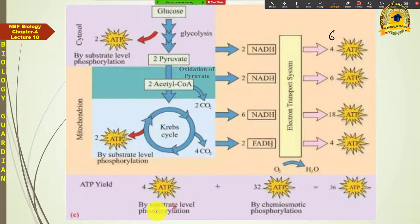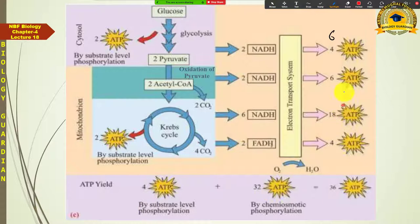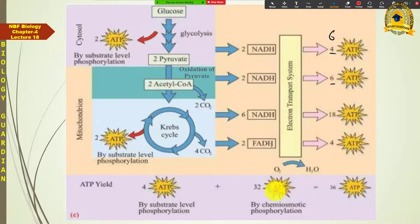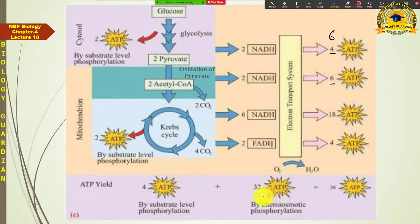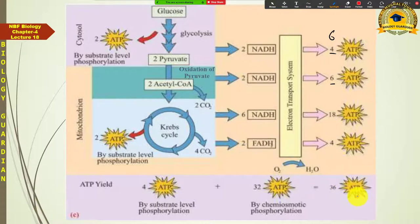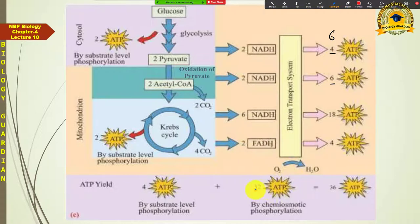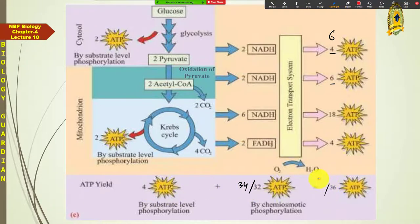The total ATP yield by substrate level phosphorylation throughout the entire pathway is 4 ATPs. The 32 ATPs are generated by chemiosmosis — that is, oxidative phosphorylation. Adding these together: 32 plus 4 gives a net result of 36 ATPs in eukaryotes. In prokaryotes, simply replace the 4 (from glycolytic NADH₂) with 6, giving 34 from chemiosmosis; adding 4 from substrate level phosphorylation gives 38 ATPs total.